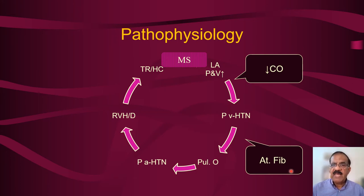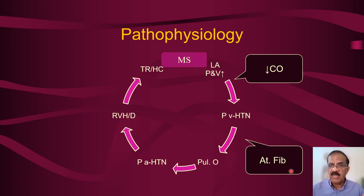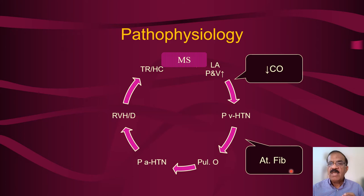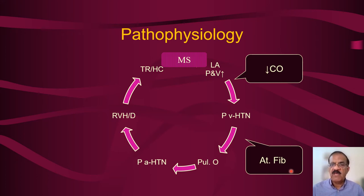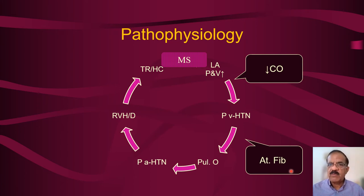In mitral stenosis, left atrial contents do not reach the left ventricle even by the end of diastole. Whenever there is tachycardia — whether sinus tachycardia, SVT, or atrial fibrillation — the duration of diastole becomes further shortened. Since even the full-length diastole was not allowing the left atrium to empty, once diastole becomes shorter, left atrial pressure rises further. Most of these patients would go into pulmonary edema because of this reduced diastole duration.